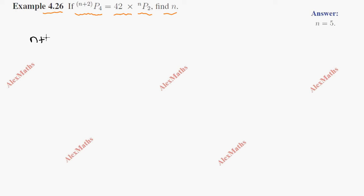So we expand (n+2)P4 as (n+2)(n+1)(n)(n-1). This is the expansion of nPr. Since we have P4, we write four terms decreasing from n+2.